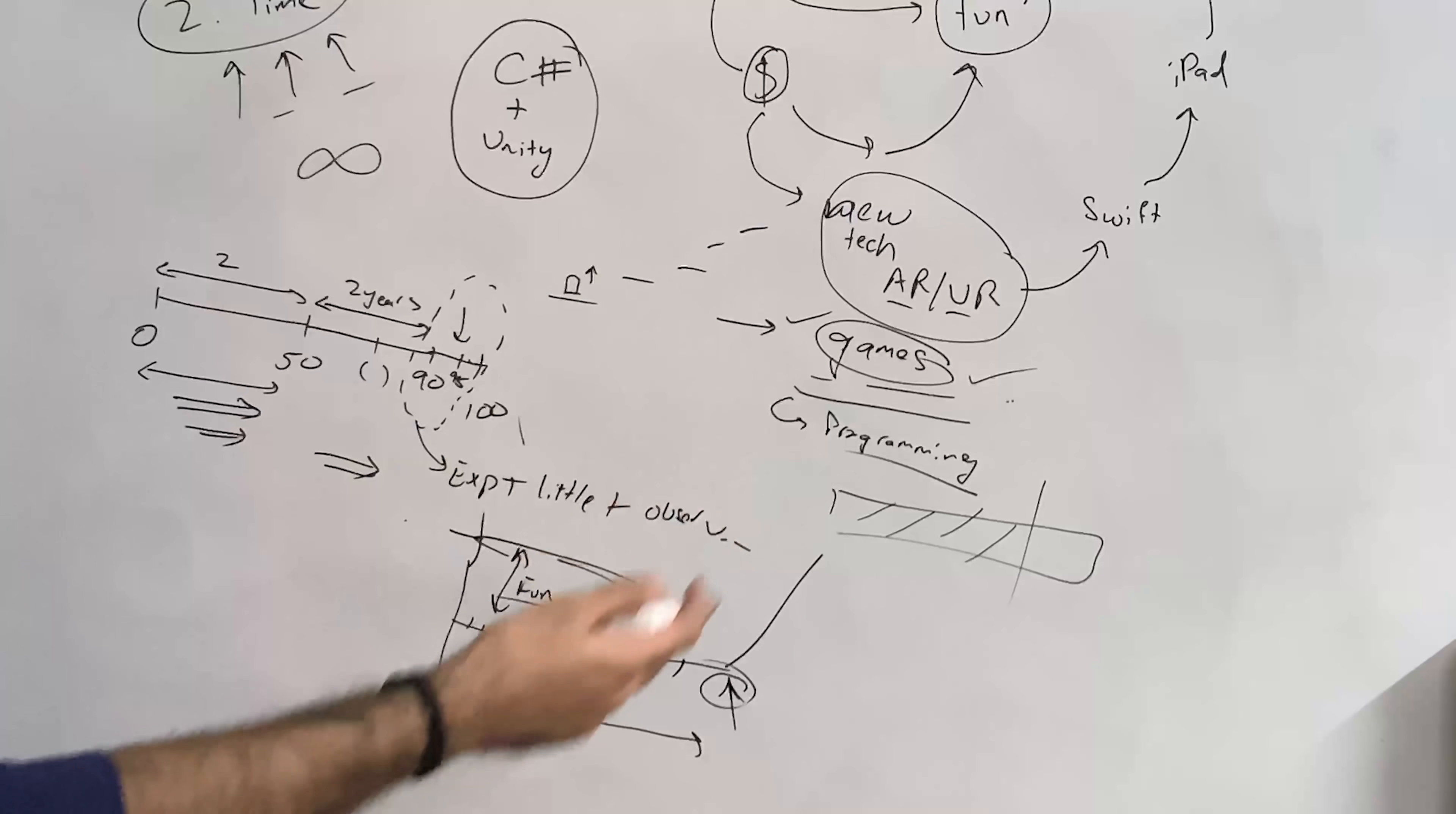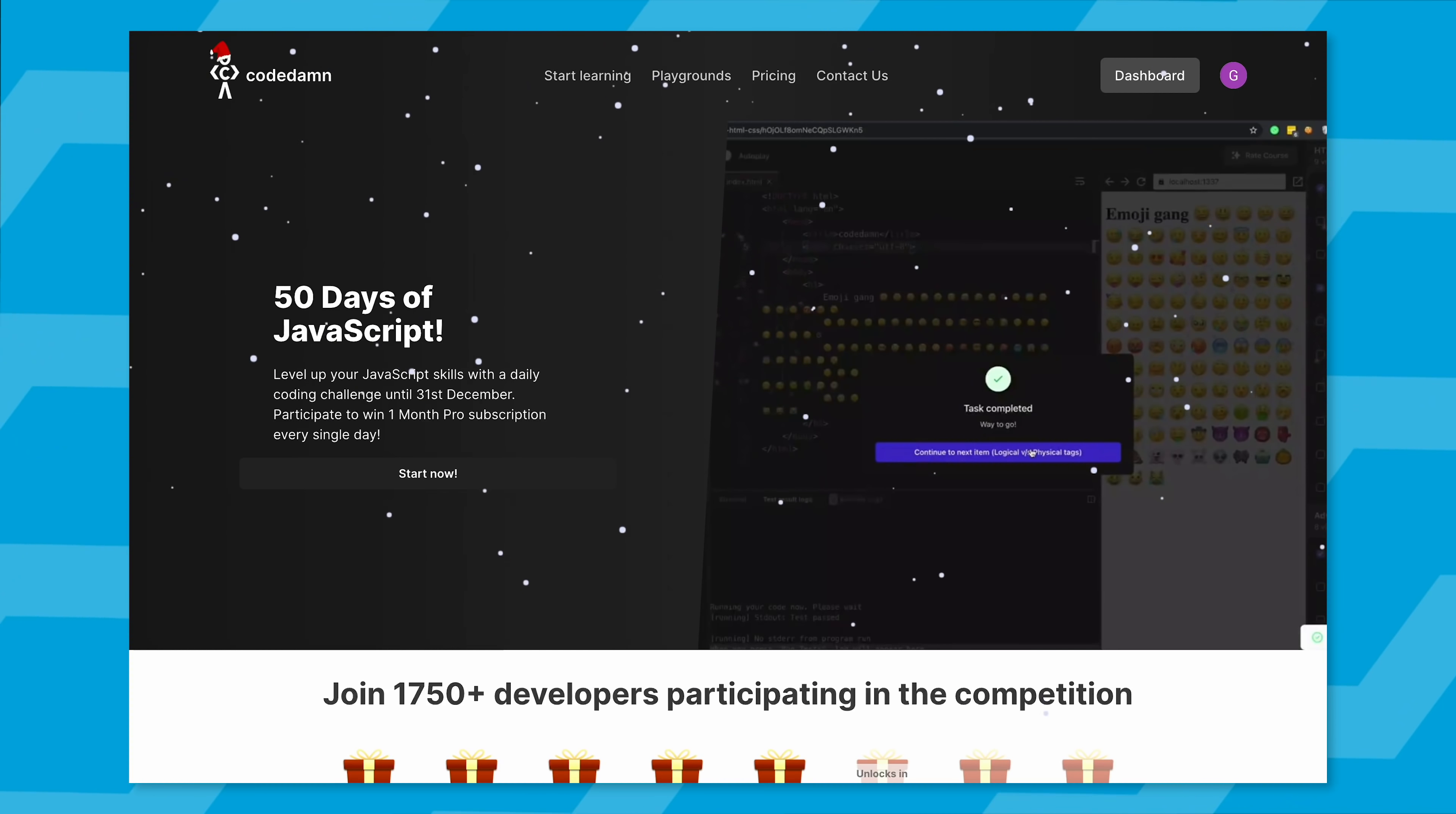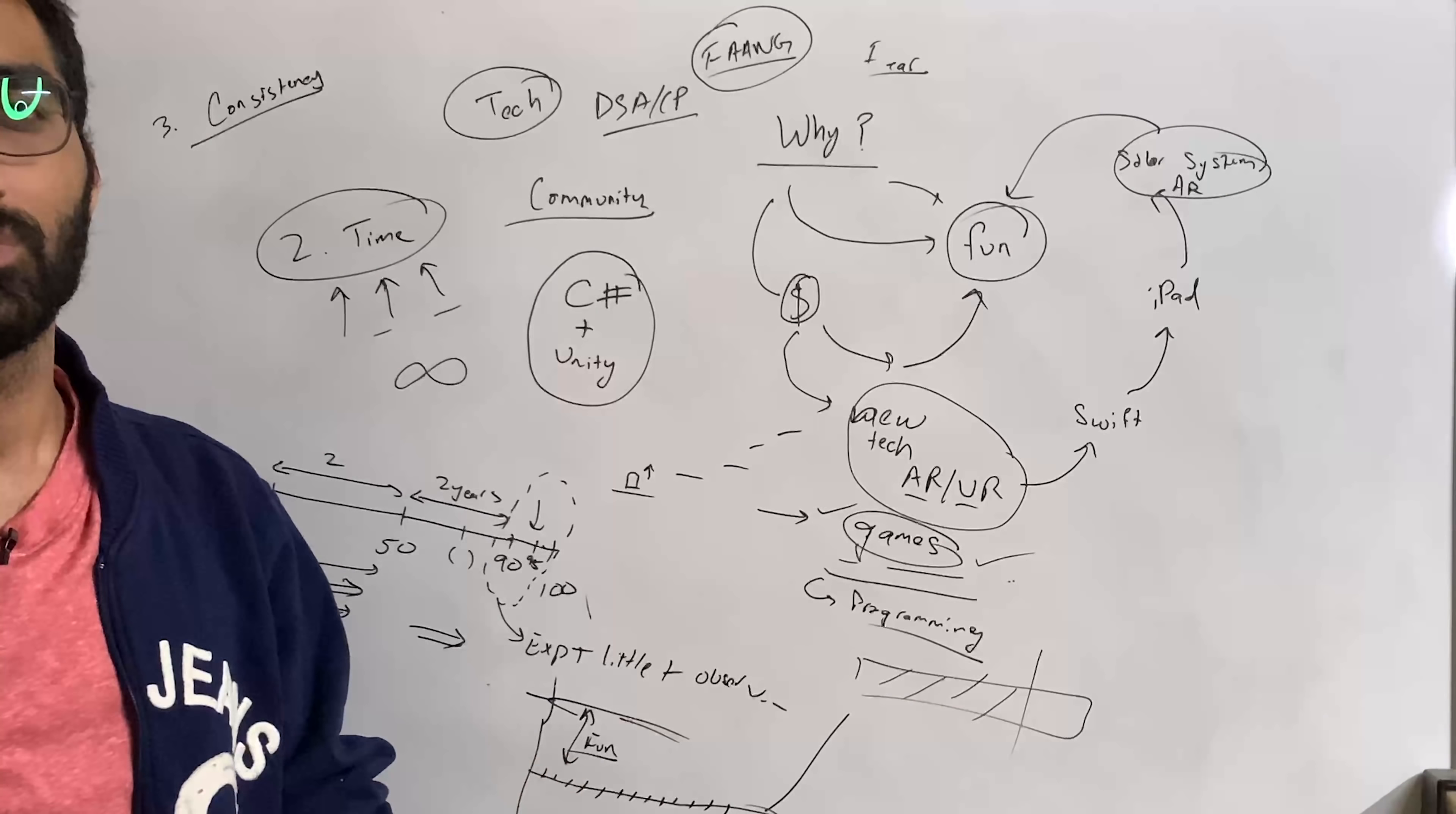How do you stay consistent? It's tough for me to answer this, it depends on person to person. Some people stay consistent if they are part of a community - like we have a Discord server you can join. We host something like 50 Days of JavaScript, a challenge on Twitter and CodeDamn - you code one problem a day in JavaScript. That's one way to stay consistent. You can create a weekly calendar of your own, but some people can just stay consistent by themselves as well.